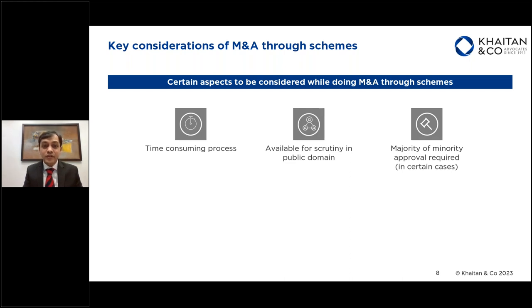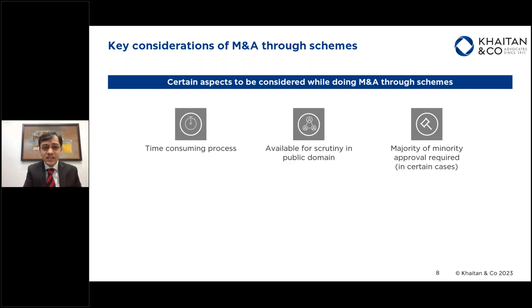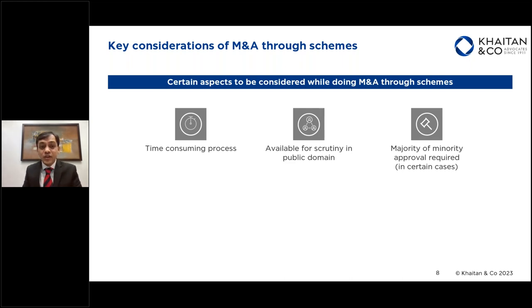Another important consideration is the approval required of a majority of minority shareholders — this is particularly true where a listed entity is involved in certain kinds of restructuring. For example, if promoters are also involved in a restructuring and there is an issue of additional shares to a promoter through the restructuring, you specifically require an approval of a majority of minority shareholders. Such a scheme can only be implemented if that favorable approval is obtained.